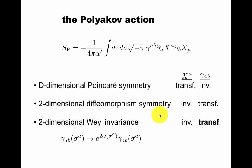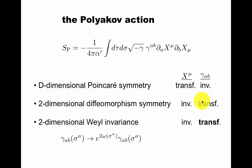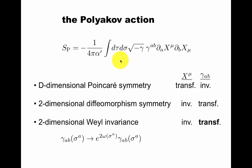So the Polyakov action will be the main object of study. It has d-dimensional Poincaré symmetry, just like Nambu-Goto, under which X transforms and little gamma is invariant. It has two-dimensional diffeomorphism symmetry — symmetry under change of coordinates on the worldsheet — under which X is a scalar and gamma transforms as a two-tensor, as befits a metric on the worldsheet. But now we have an additional funny symmetry called Weyl invariance, under which X is invariant but little gamma transforms with a rescaling. It's an overall rescaling — so it has no matrix structure — but it can depend on the coordinate sigma.